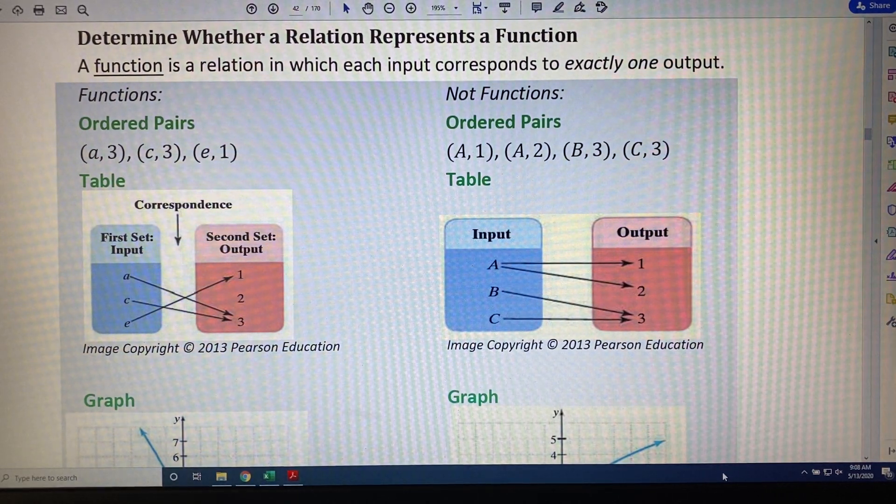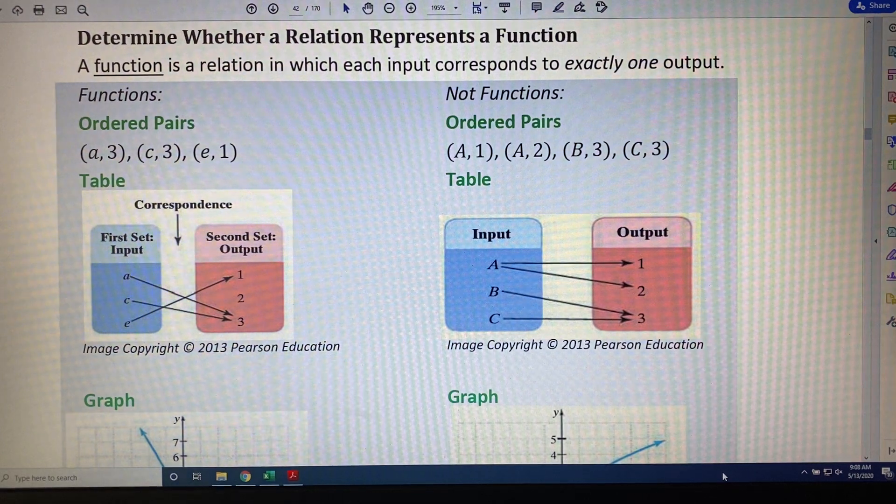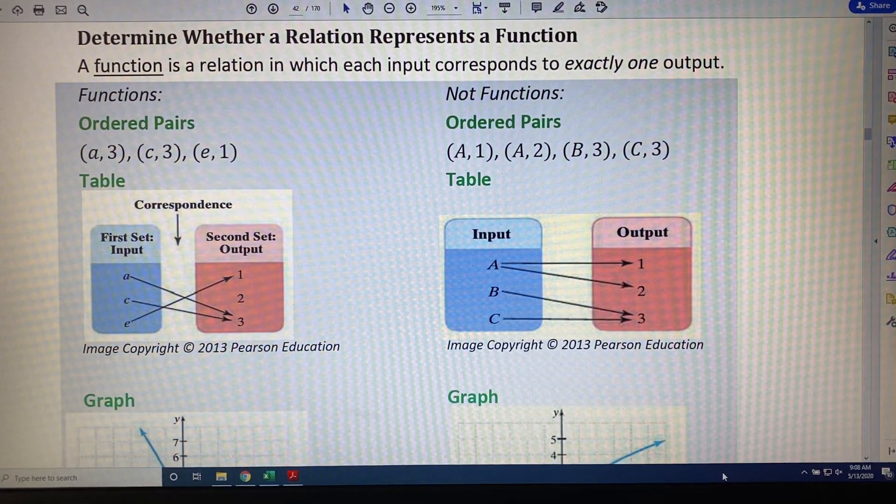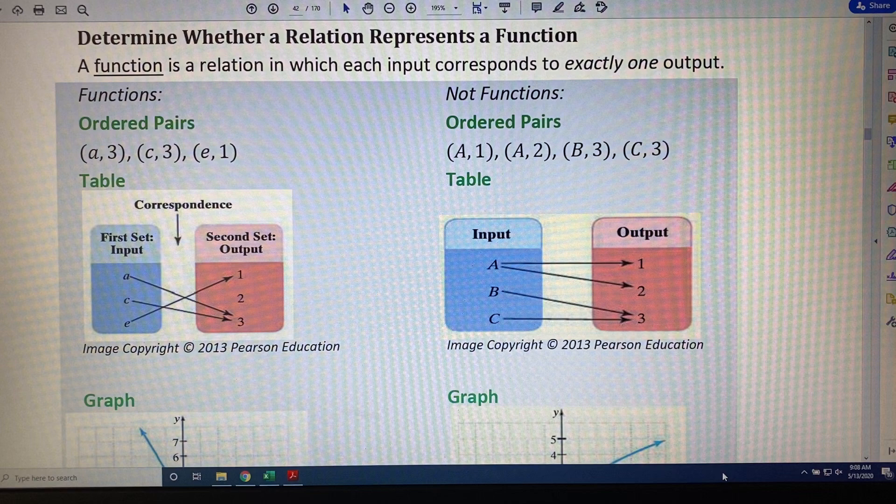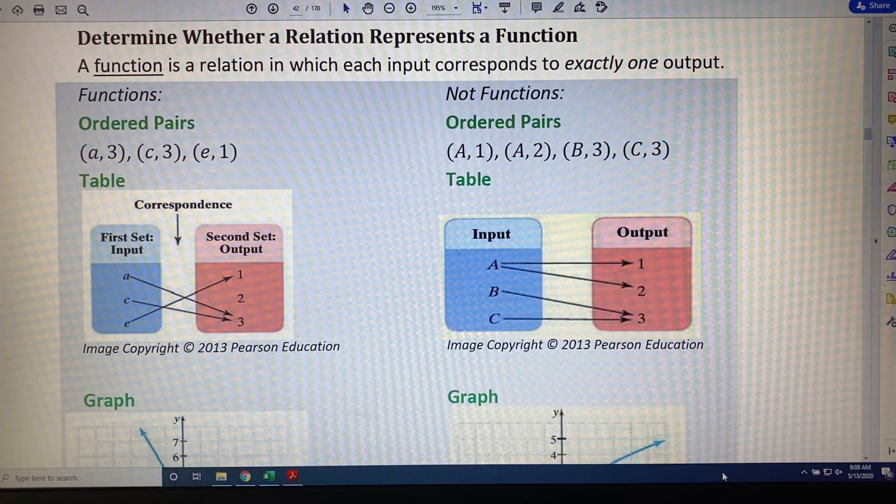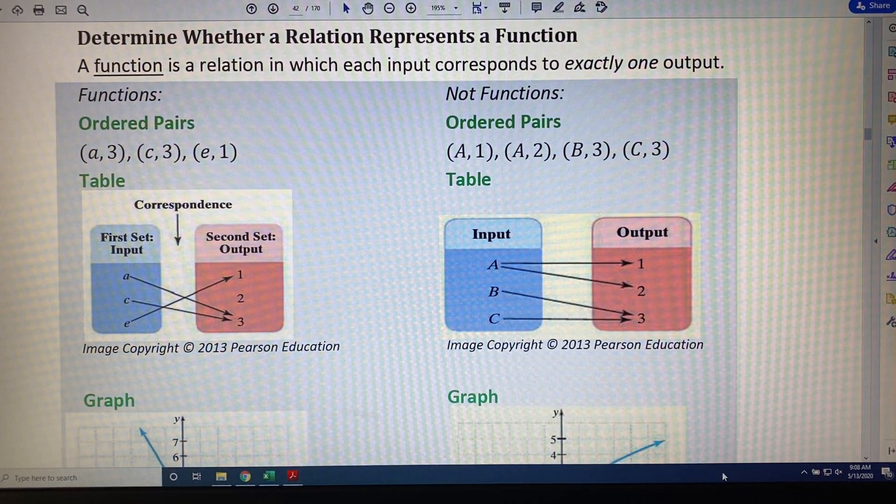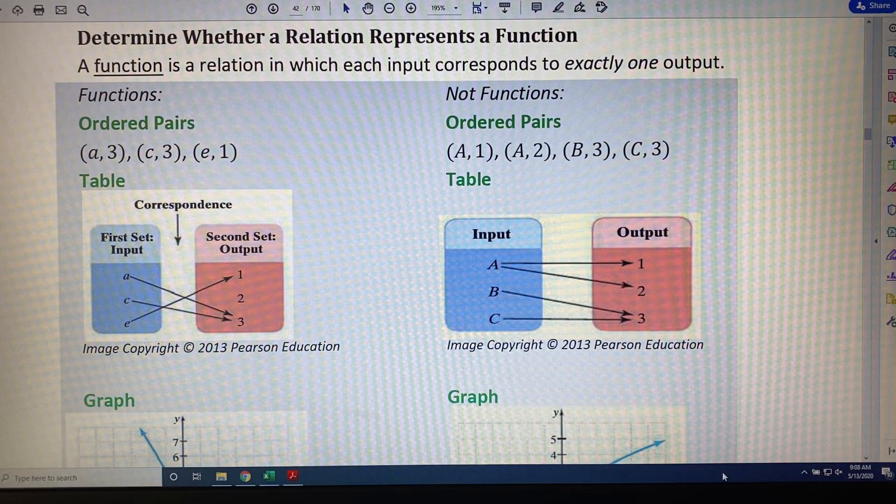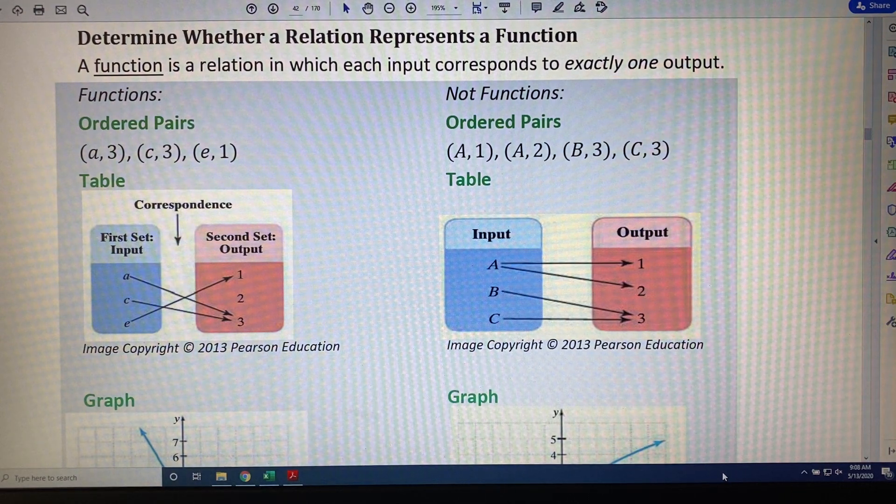Here's a simple real-world example. The number of kilowatt hours used by a household has to be converted into a dollar amount so that the utility bill can be paid. A relation converts input to output, and it takes many different forms.